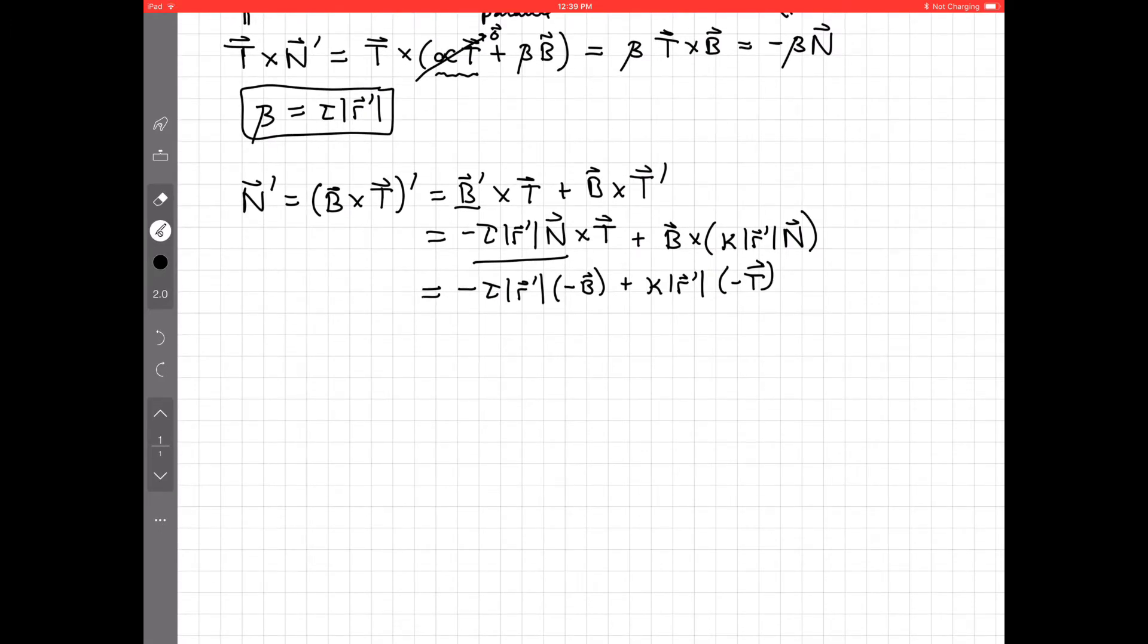So what do we end up with? Okay, well, we end up with that n' is minus curvature times r', the speed, times t. That's our alpha is the minus curvature times speed. And then plus, because notice there's two minus signs here. So we have plus torsion times speed times the binormal.